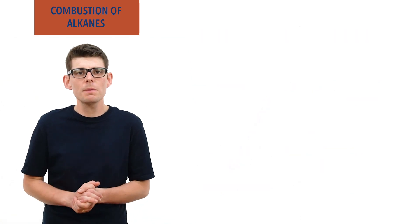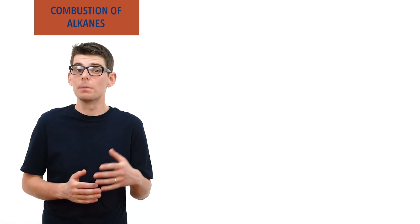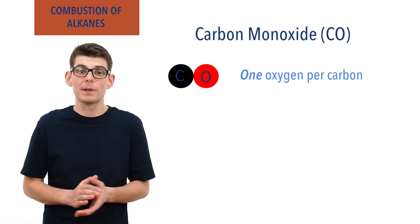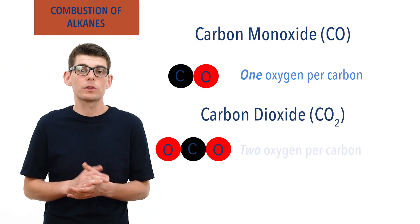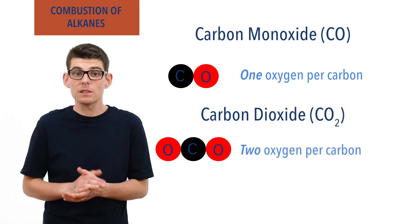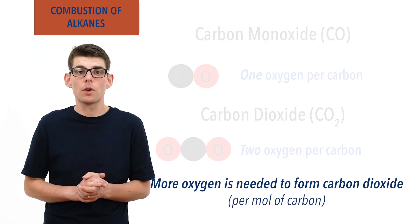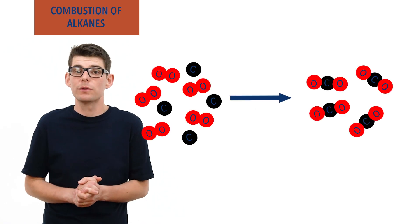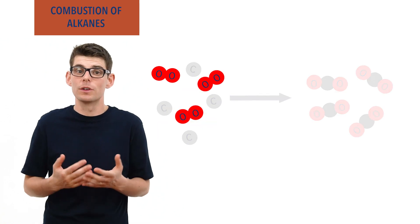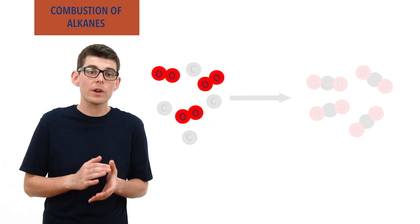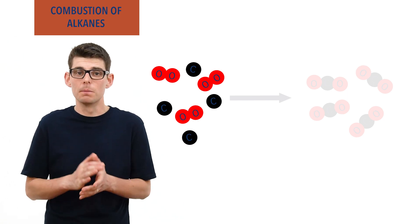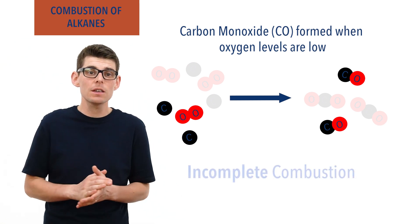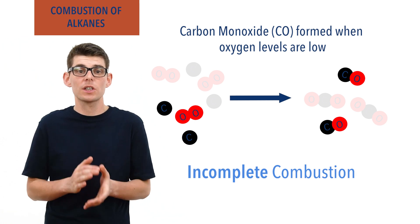Carbon monoxide requires less oxygen per mole of carbon than carbon dioxide does. In carbon monoxide, there is only one oxygen atom per carbon atom. In carbon dioxide, however, there are two oxygen atoms per carbon atom. This means forming carbon dioxide requires larger amounts of oxygen per mole of carbon. If, during a combustion reaction, oxygen levels fall too low, there simply isn't enough oxygen available to form carbon dioxide from all the carbon atoms in the fuel. As a result, carbon monoxide will start to be produced.